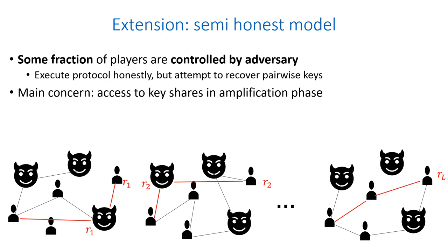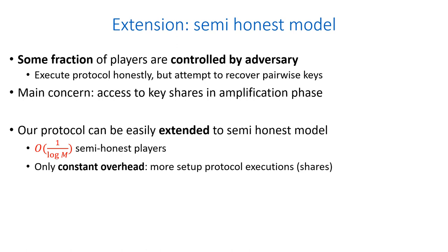For the secret key to remain secret, one of the paths must be clear of adversaries, like the path of the last key share. Our protocol can be easily extended to deal with a semi-honest participant model where a fraction of 1 over log M of the players are semi-honest. This extension costs only a constant overhead in more setup protocol executions.